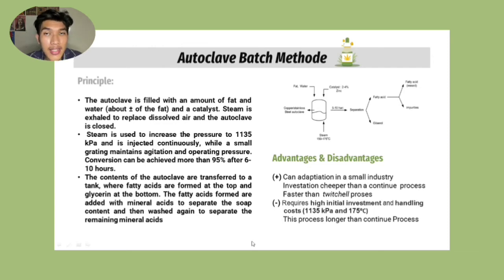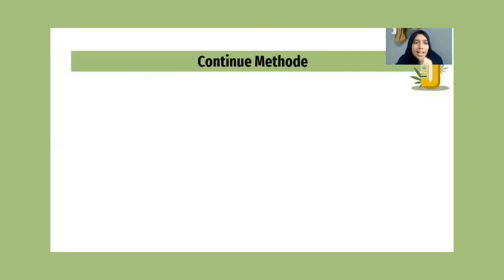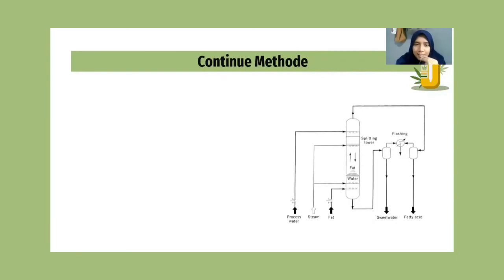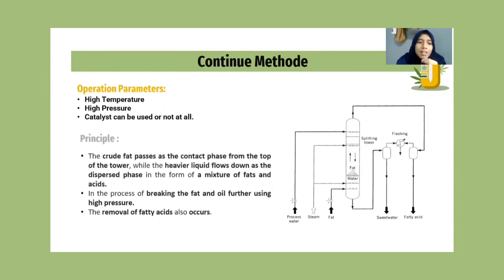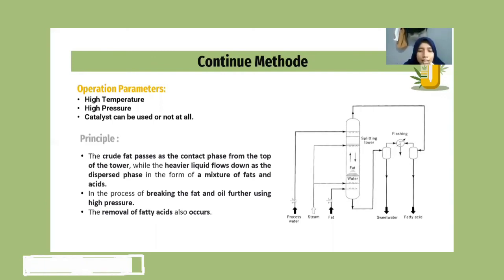The next method is the continuous method. Here is the flow diagram. This method has the following operation parameters: it requires high temperature, high pressure, and catalysts can be used or not — so catalysts are optional. The principle is: crude fat passes as the contact phase from the top of the tower, while the heavier liquid flows down as the disperse phase in the form of a mixture of fats and acid. The process further breaks down fat and oil using high pressure, and removal of fatty acids also occurs in this method.